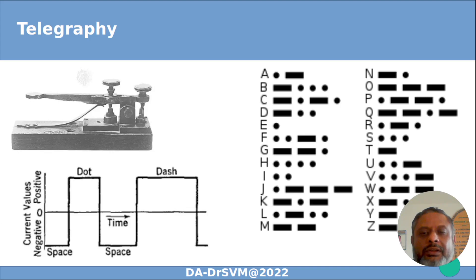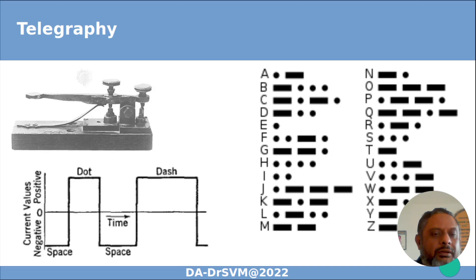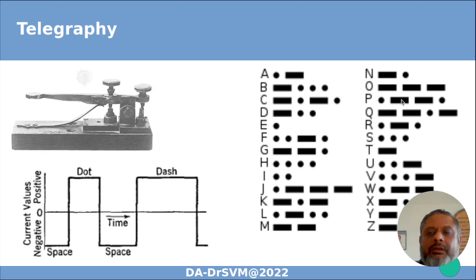Using dash and dot combinations, the script is written and transmitted using the switch. On the other side, it is heard through the speaker. If it makes a short, shorter sound, it is a dot; a longer sound is a dash. The operator is listening and accordingly marks dot and dash. A dot is when the switch is closed for a short duration, and a dash is when it is closed for a longer duration. That's the Morse code for A to Z.